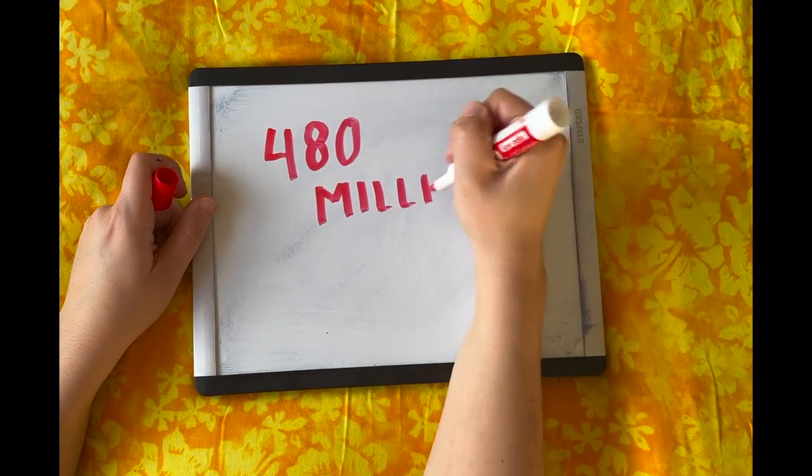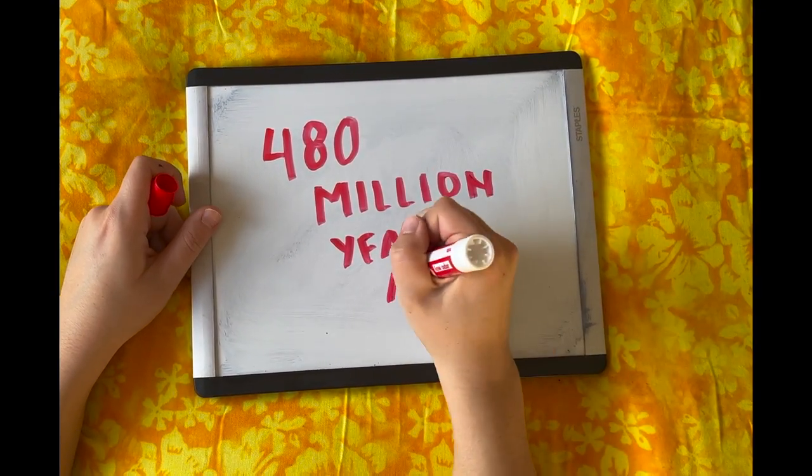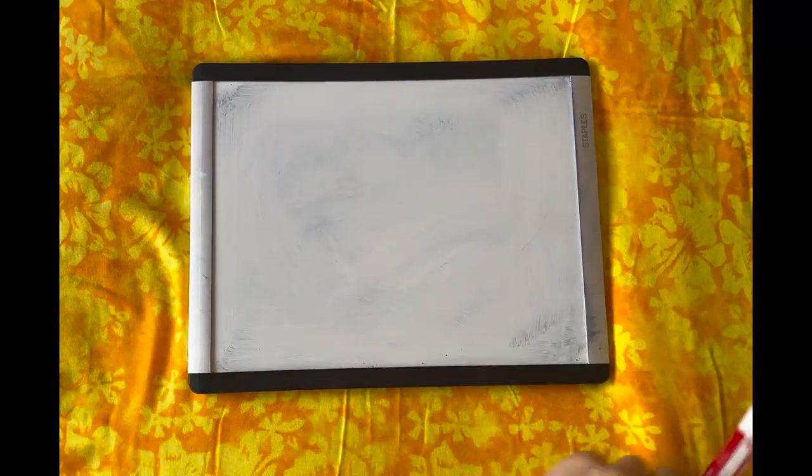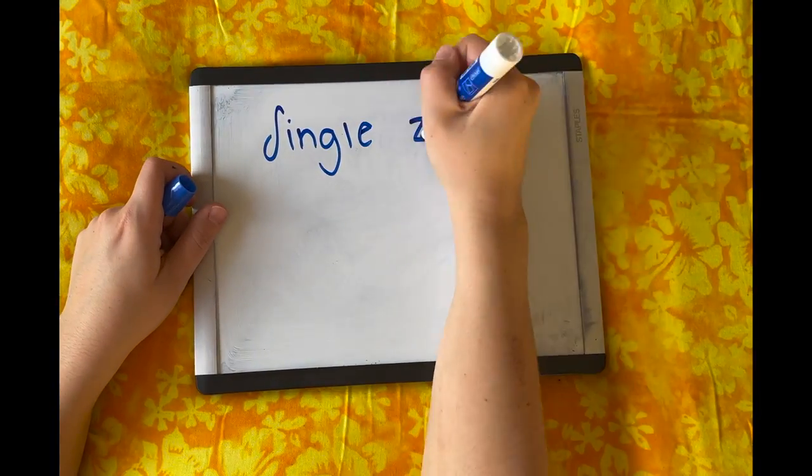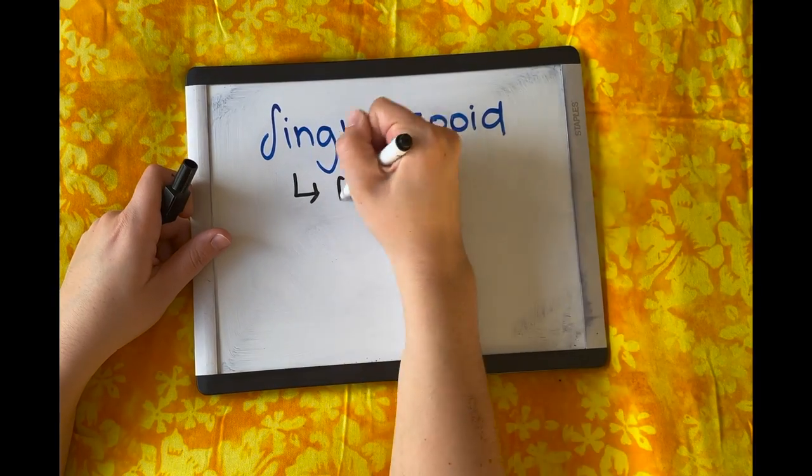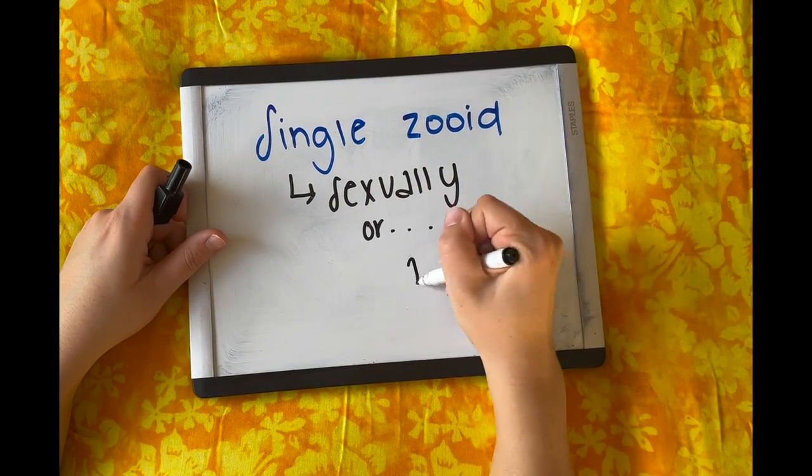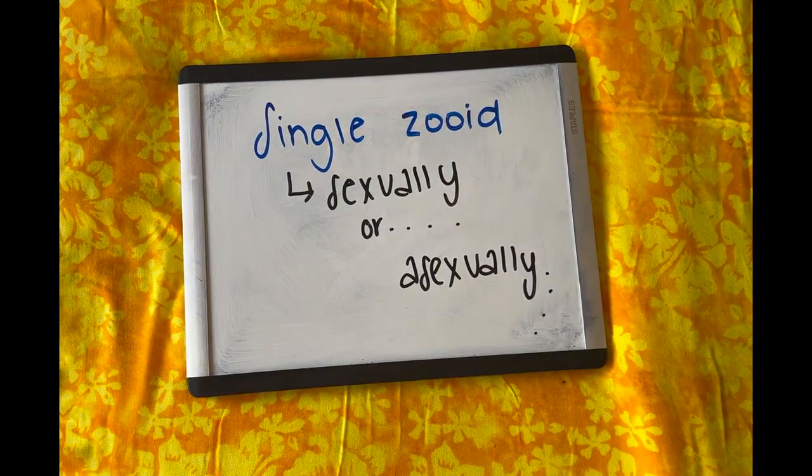The Bryozoa originated about 480 million years ago. The Bryozoa colony starts out by a single zooid, which may be produced either sexually or asexually. When the original zooid begins feeding, it buds to form additional genetically identical zooids, forming a colony.